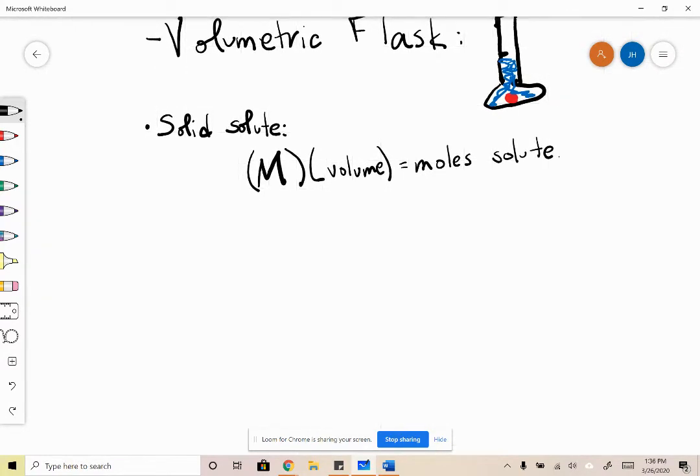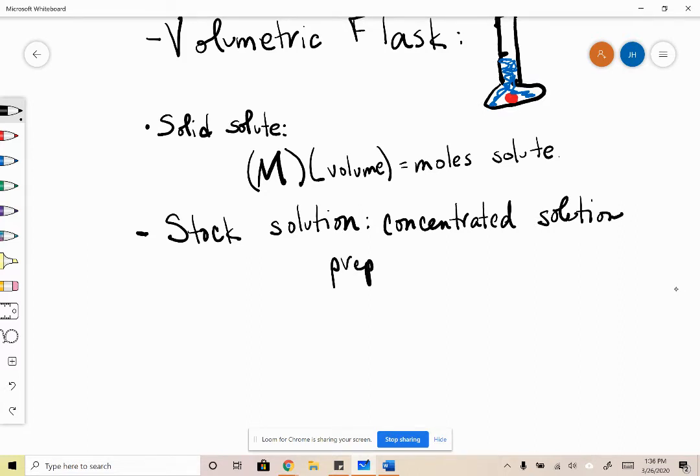Typically when people are making solutions, especially if it's a solution that you use very often, scientists will make what they call a stock or standard solution. A stock solution is just a relatively concentrated solution that is prepared in bulk, so you'd make up a couple of liters of whatever your stock solution is.